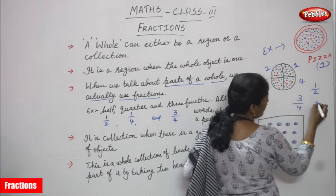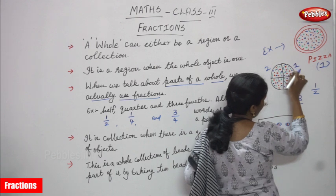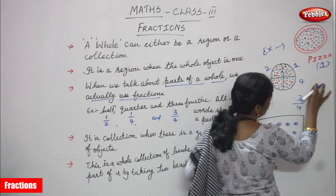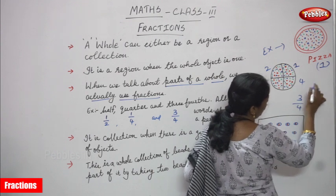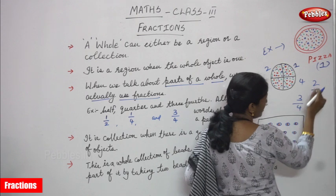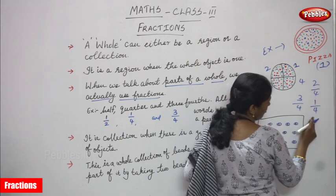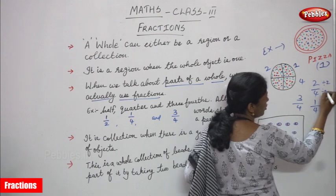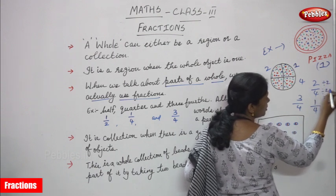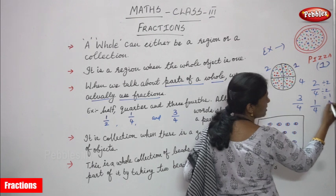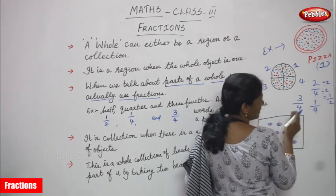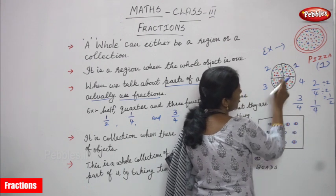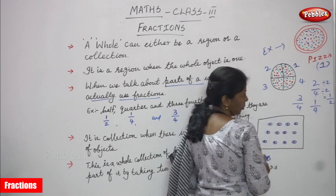If I need only one part, that is one by four. If I need two parts, that is two by four. If I simplify two by four: two divided by two gives one, four divided by two gives two — so that is one by two. Three parts means three by four. And four by four means the whole pizza.